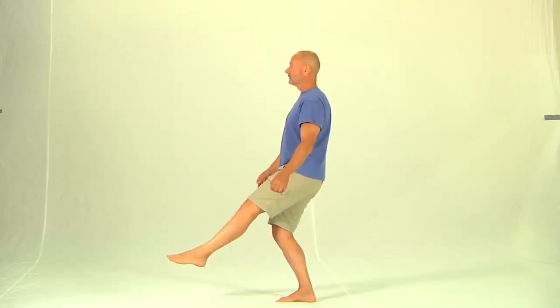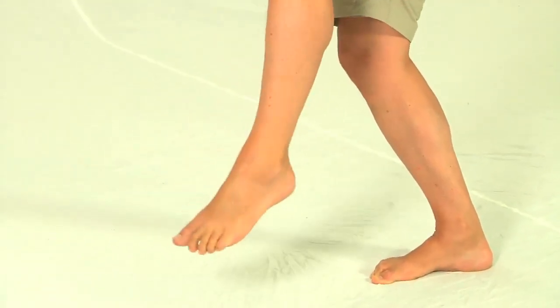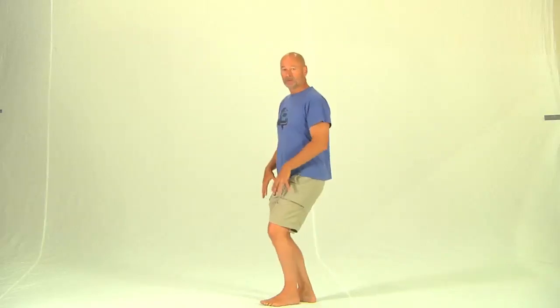We do the little circles in both directions. And all the other things that we did before, the figure of eights, the Mobius strips and so on, and out to the side and behind. They're all done the same, except you're on a bent supporting leg. You'll find this significantly more difficult, not to mention these muscles get tired just holding yourself up.